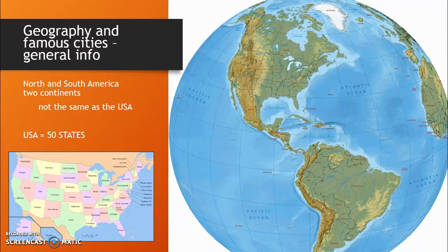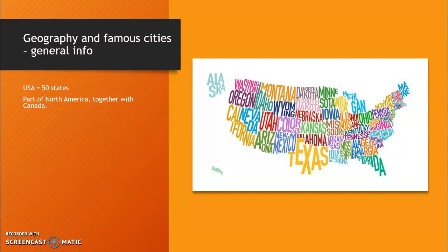The US is a country divided into 50 states. You can see all of the names of the states here, but you only have to learn the states and abbreviations that we have highlighted down here.